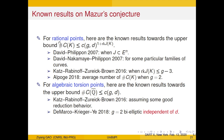For algebraic torsion points, in the same paper Cass-Rabinoff-Strickland-Brown proved this kind of bound assuming some good reduction behavior, because they need to use the Berkovich space at some prime. And DeMarco, Krieger, and Ye proved this result for bi-elliptic curves, but their result is an actual uniform Manin-Mumford result in the sense that their dependence has no height — which is stronger than ours in this particular case.